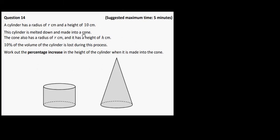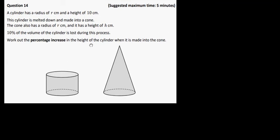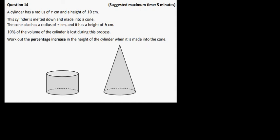Okay, so next one then we have a cylinder has radius of R. So let me just put that in here actually. So we have a radius R here. Do that again. So we have a radius of R and a height of 10 centimeters. So we have 10 centimeters here.